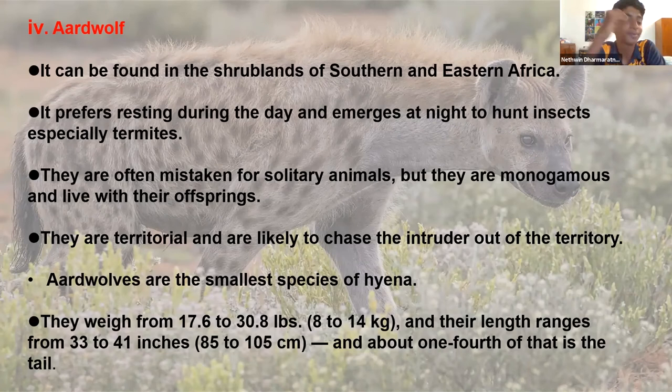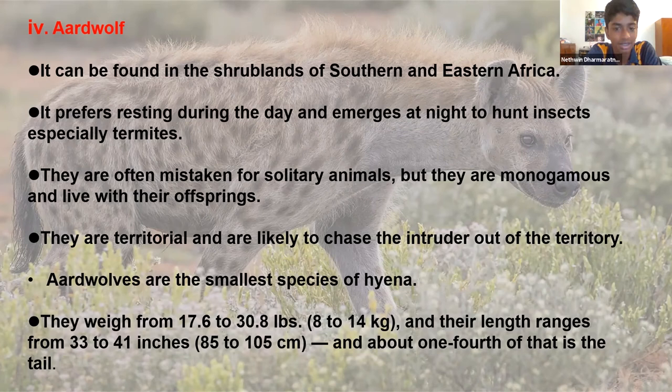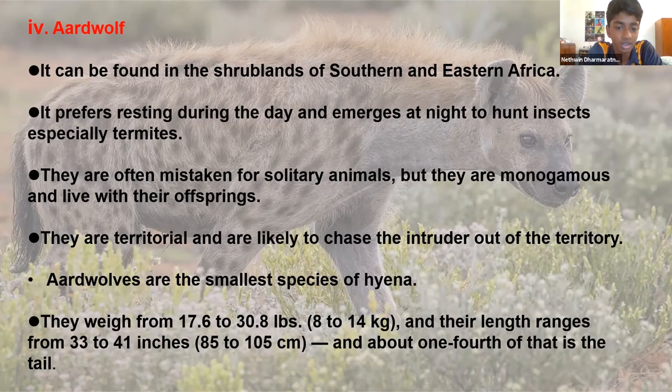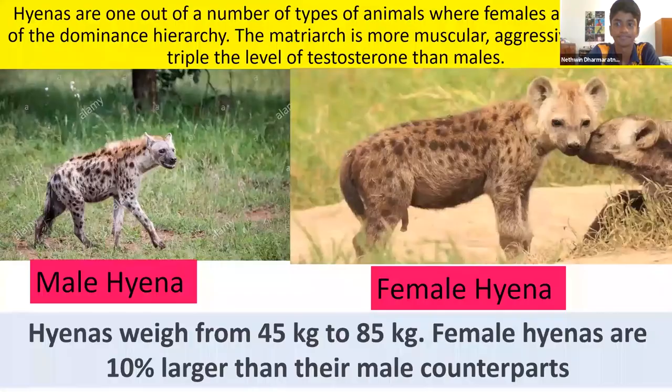The aard wolf can be found in the shrublands of Southern and Eastern Africa. It prefers resting during the day and emerges at night to hunt insects, especially termites. They are often mistaken for solitary animals, but they are monogamous and live with their offspring. They are territorial and likely to chase intruders out of their territory. Aard wolves are the smallest species of hyena, weighing from 17.6 to 30.8 pounds, with a length of 33 to 41 inches, about one fourth of which is the tail.